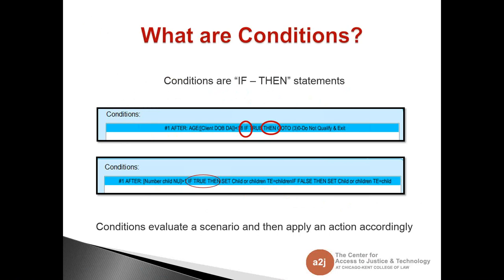The second condition evaluates whether the number the end user puts in for number of children is greater than one. If that is true, then I want to set a new variable — child or children TE — to 'children.' If it is false, I want to set that same variable to 'child.' So if they say they have three children, in subsequent questions I can personalize it: 'what are the names of your children' rather than 'what is the name of your child or children.' This personalizes it for the end user.